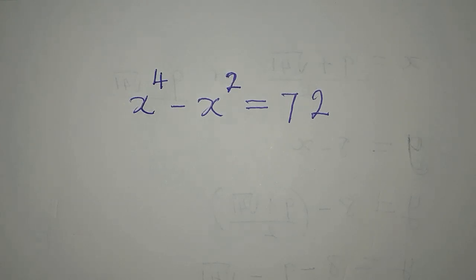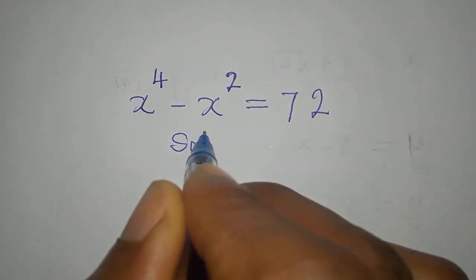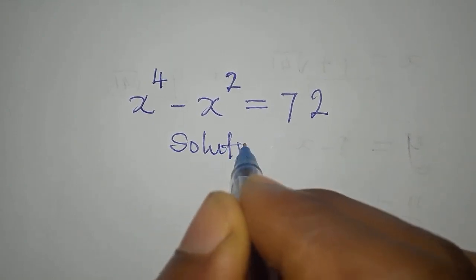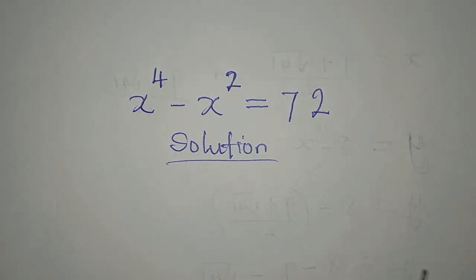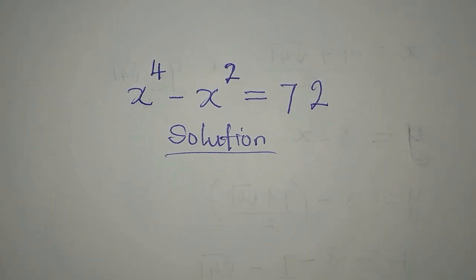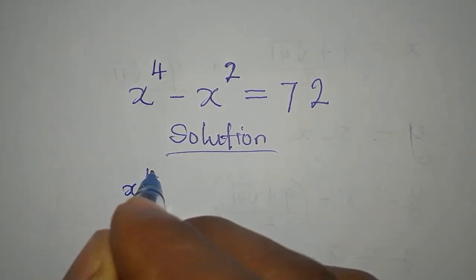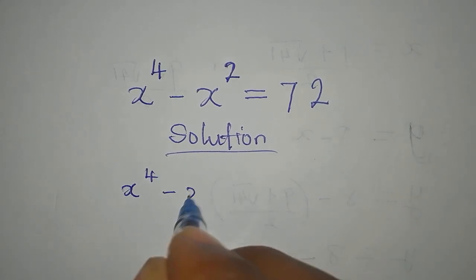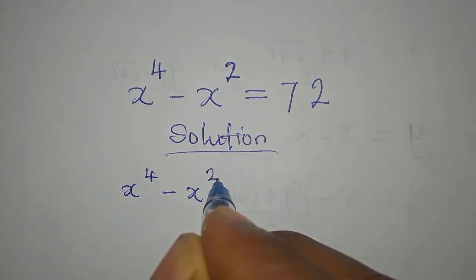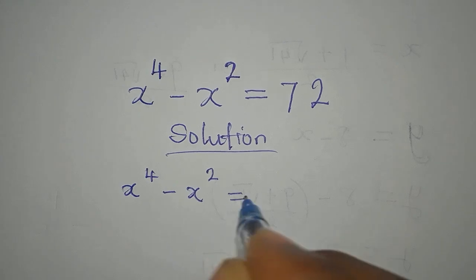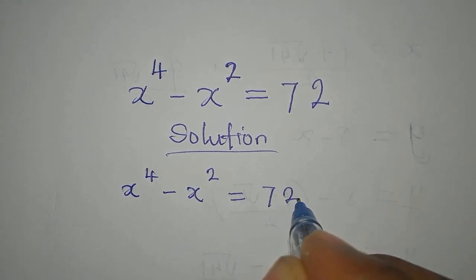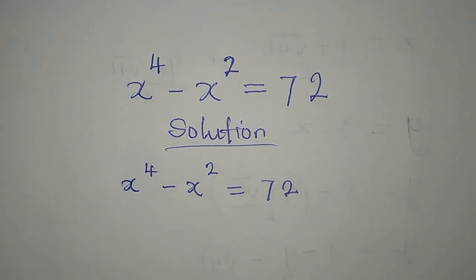Hello everyone, let's provide the solution to this problem. We have x to the power of 4 minus x to the power of 2 equals 72. We are going to provide only the real solution to this problem.